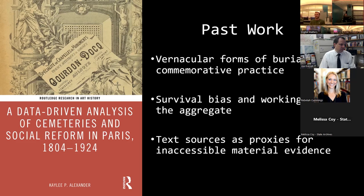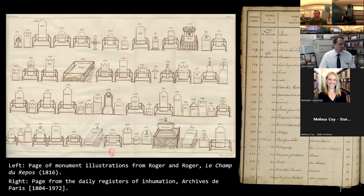I wanted to study more vernacular forms of non-elite individuals that didn't survive into the present — things that haven't been deemed cultural heritage — and see what those objects could tell us about how people were commemorating their loved ones in the 19th century. I was really interested in survival bias and how to use data to combat it. Working in the aggregate, we can start to see patterns and trends that we don't get in traditional art historical research. I was using text-based sources as proxies for inaccessible material evidence, including books with records of 2,000 monuments. Because the French are really meticulous about record-keeping, I had burial records for everyone buried in the city of Paris from 1804 to 1972.